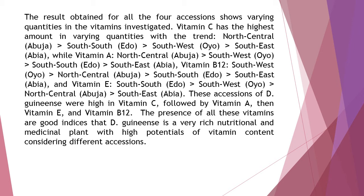Vitamin A followed the trend: north-central (Abuja), south-south (Edo), southeast (Abuja). Vitamin E showed the trend: south-south (Edo), southwest (Oyo), north-central (Abuja), south-south (Edo), southeast (Abuja). These accessions of D. guineense were high in vitamin C, followed by vitamin A, then vitamin E, and vitamin B12. The presence of all these vitamins are good indices that D. guineense is a very rich nutritional and medicinal plant with high potentials of vitamin content considering different accessions.